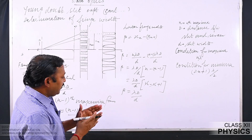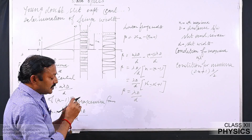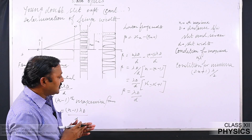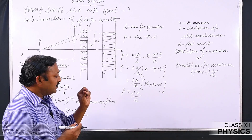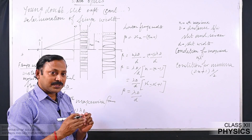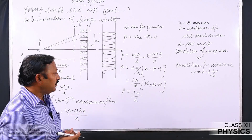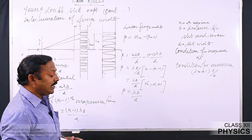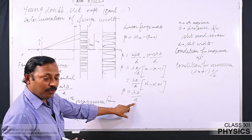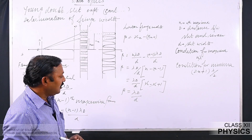If we keep the slit separation d large, the fringe width becomes smaller, and the bright and dark bands become thin. In that case we cannot distinguish the bright and dark bands, and a continuous illumination results so we cannot identify the interference pattern. That is why the value of d should always be kept low in order to get an appreciable fringe width.